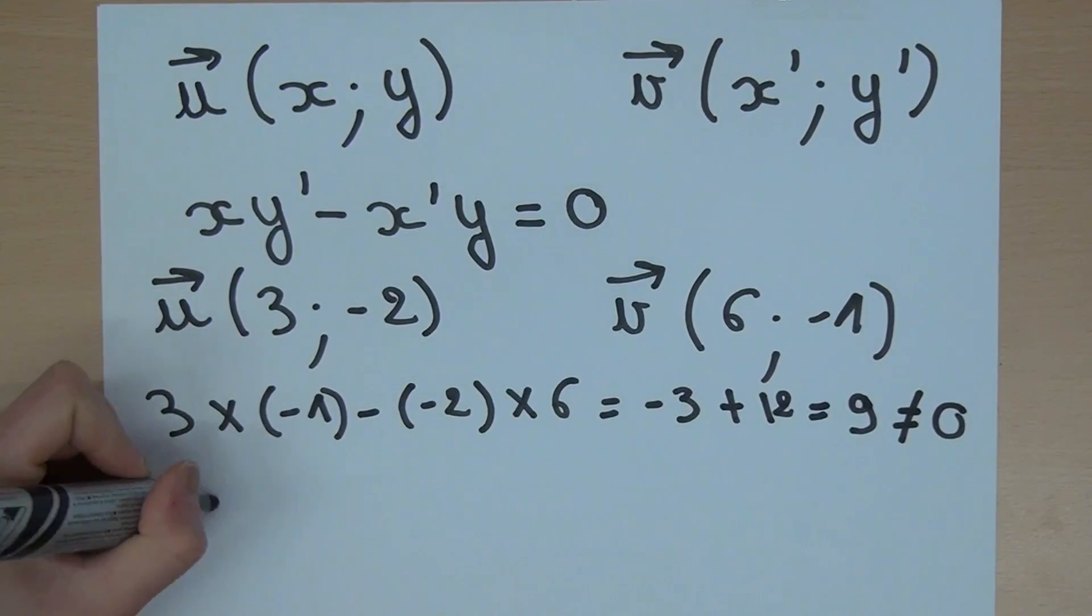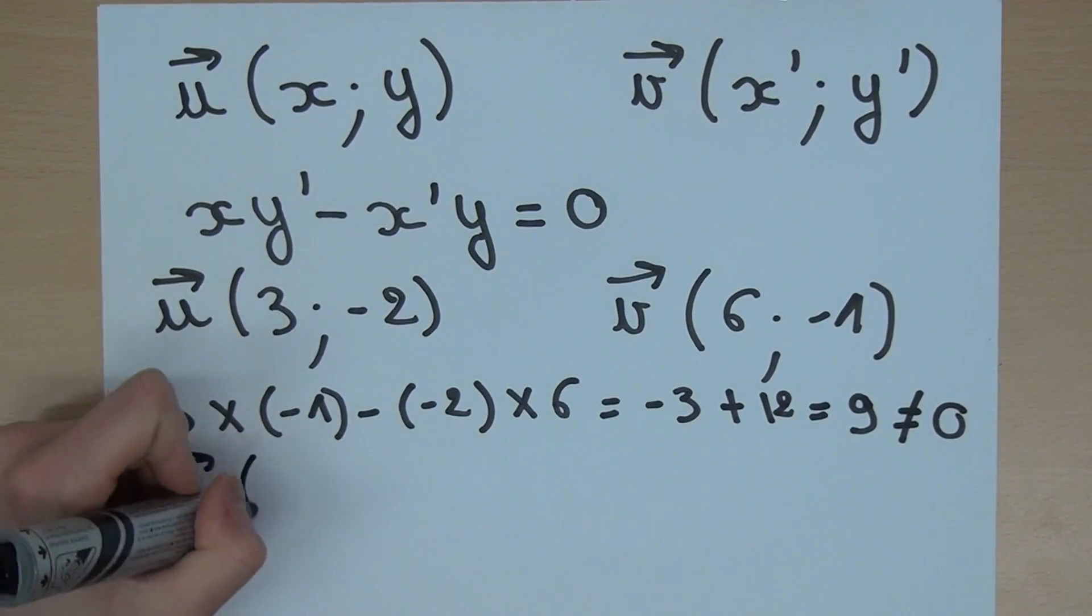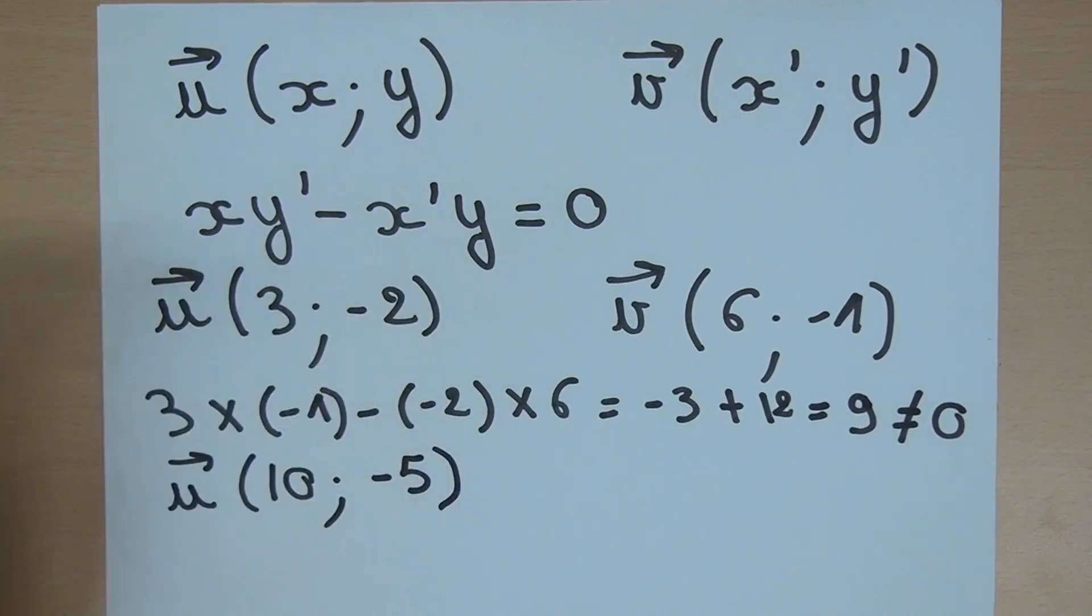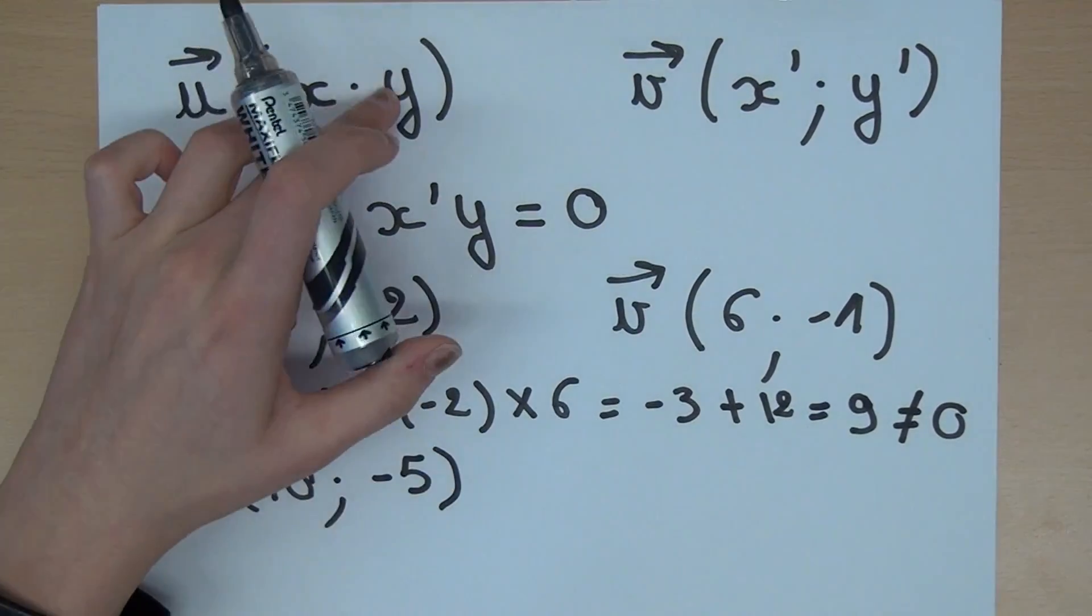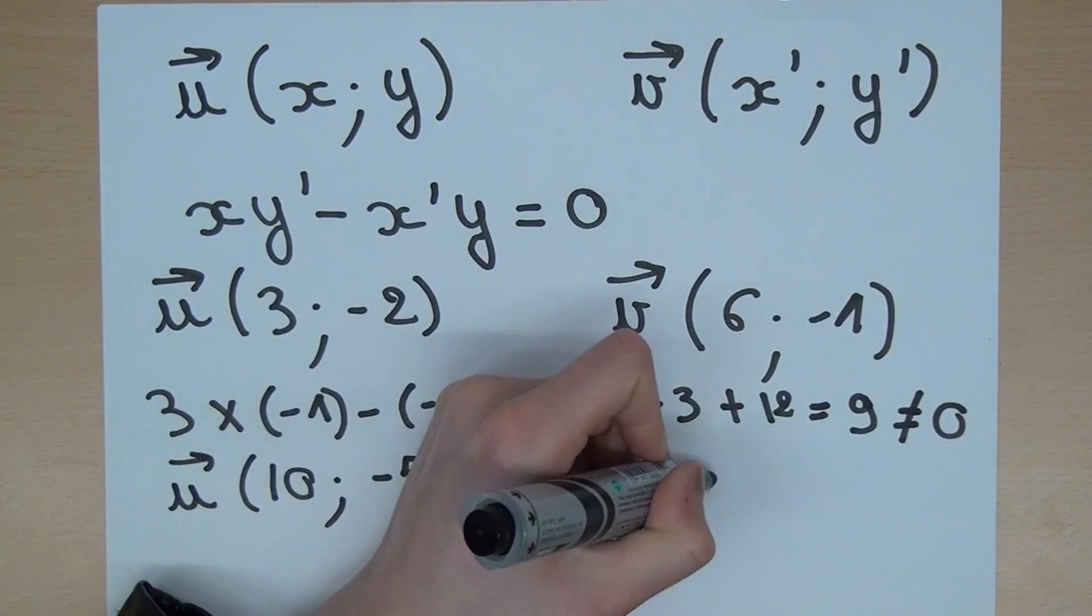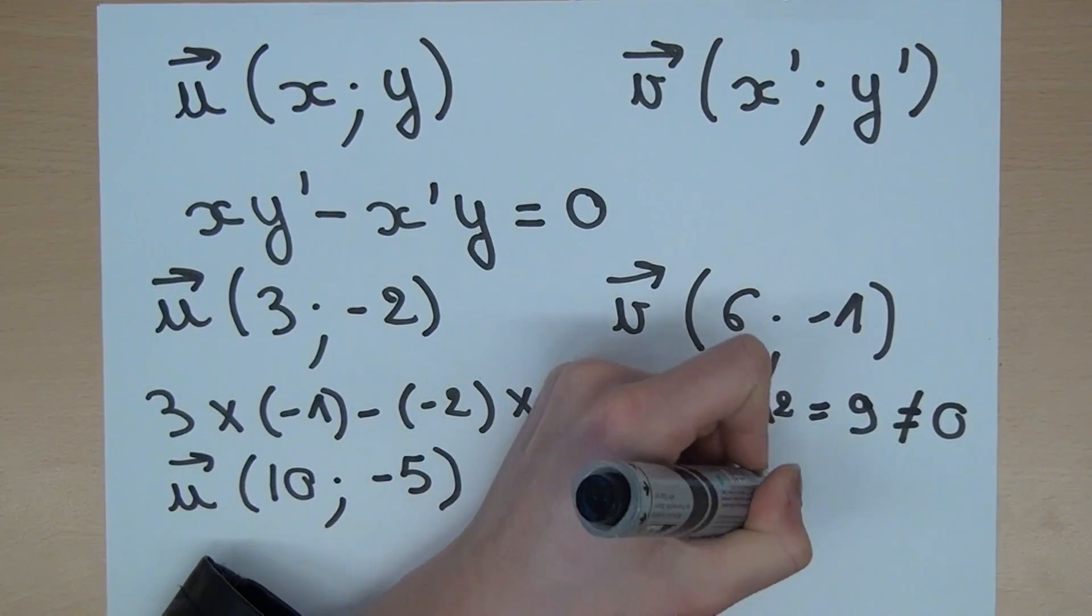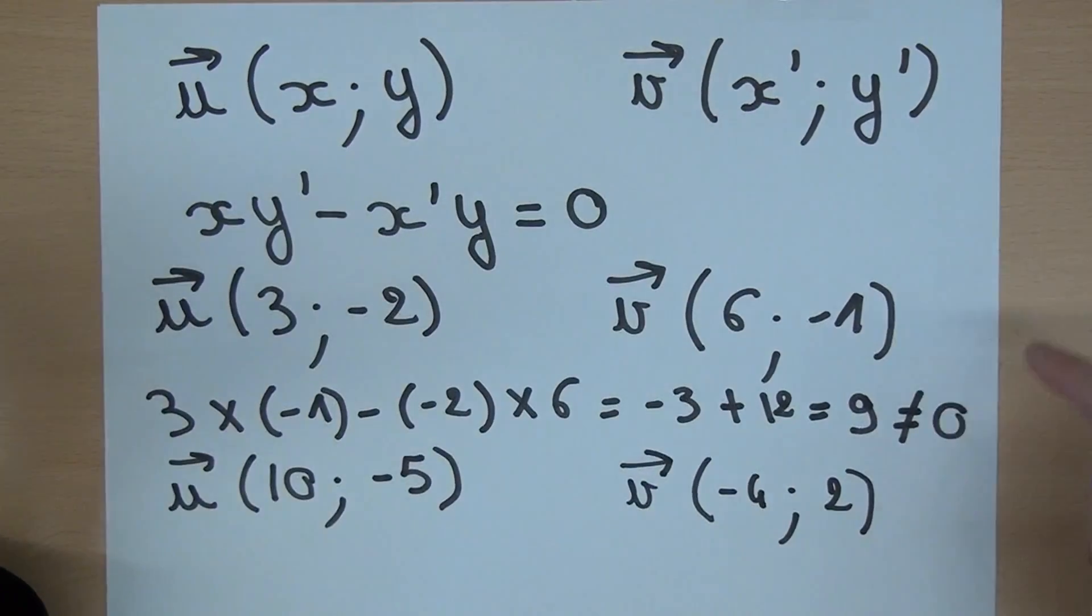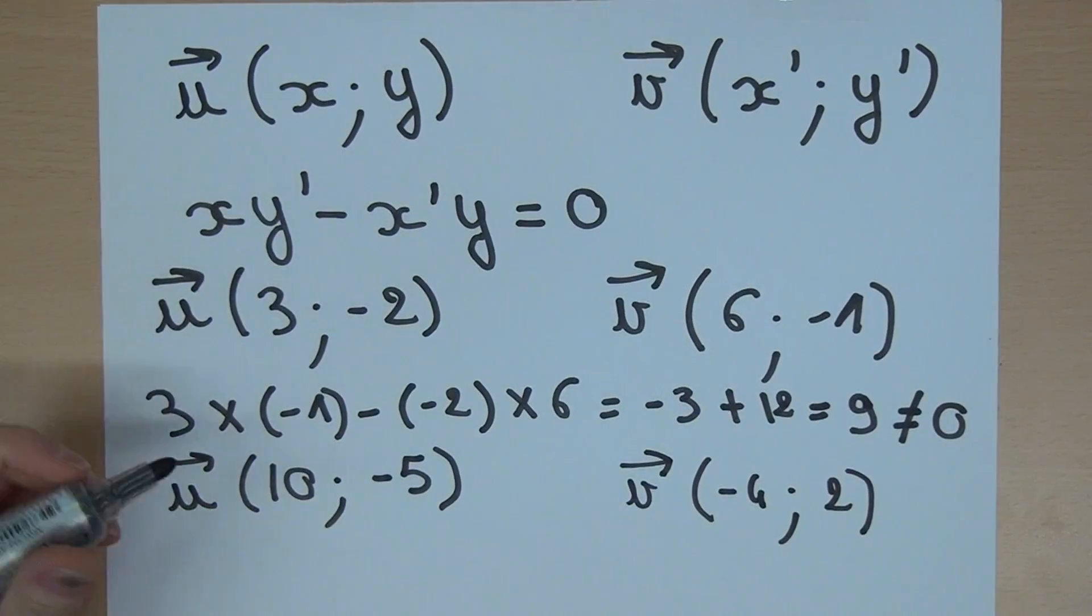So, u(10, -5). 10 is x and -5 is y. And v(-4, 2). -4 is x' and 2 is y'.